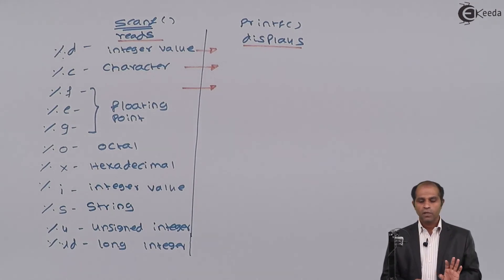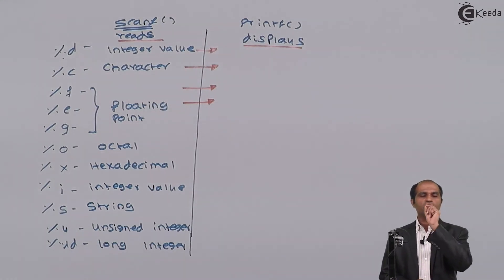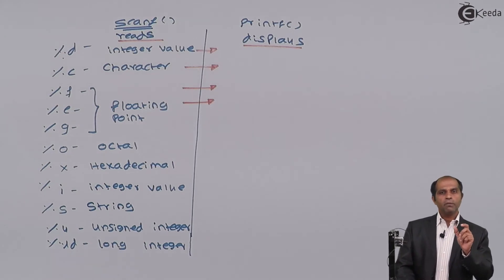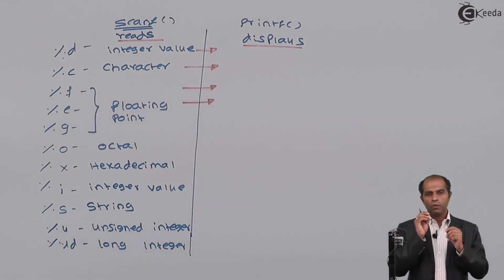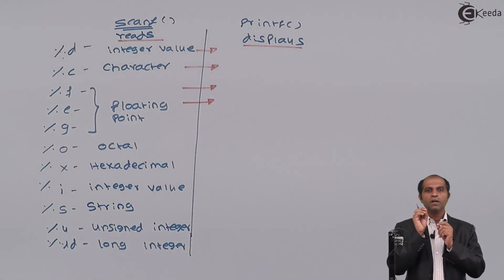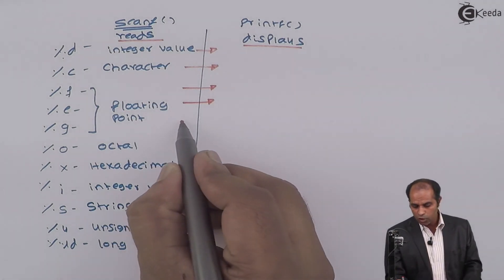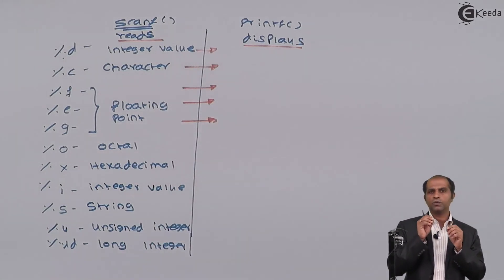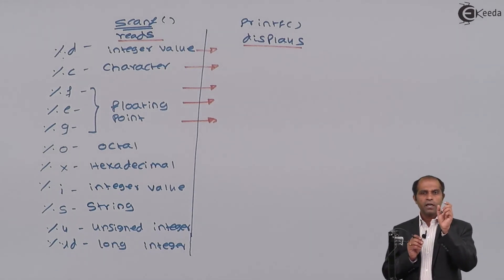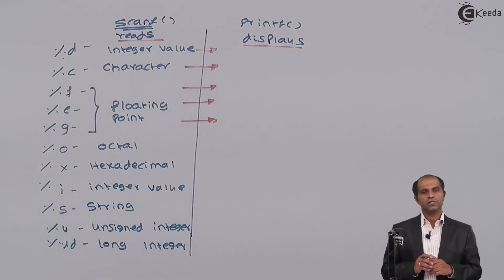%e displays a floating point value in exponential format. When a number is very large or very small, it is expressed as a power of 10 using the 'e' notation. So the %e specifier displays the number in exponential format. %g displays the floating point number without additional zeros — if a fractional number has only two decimal places, it will display only two decimal values with no additional zeros.